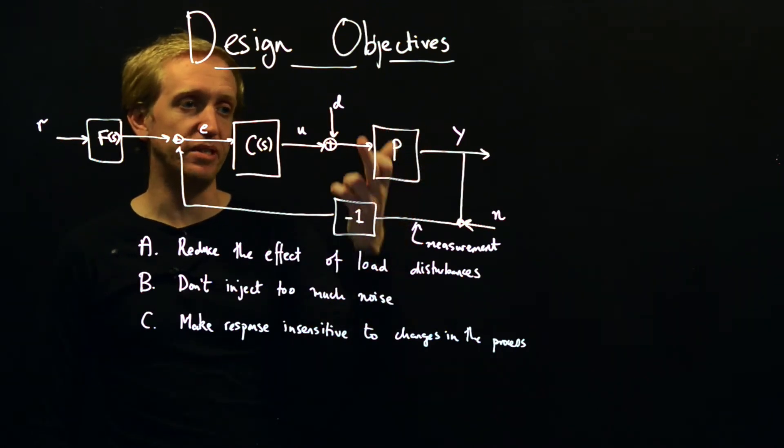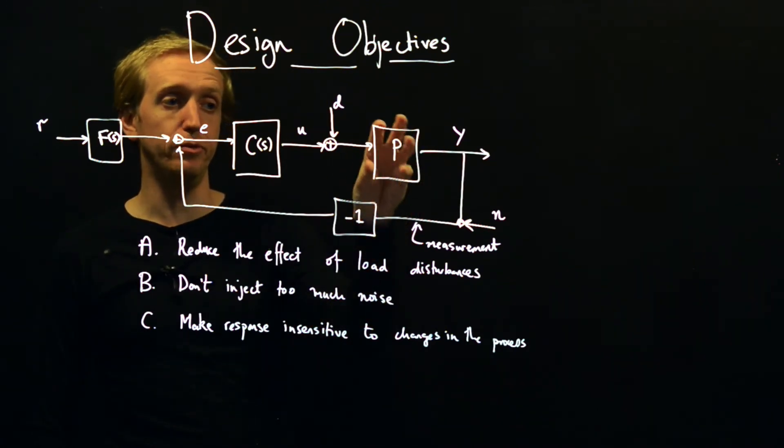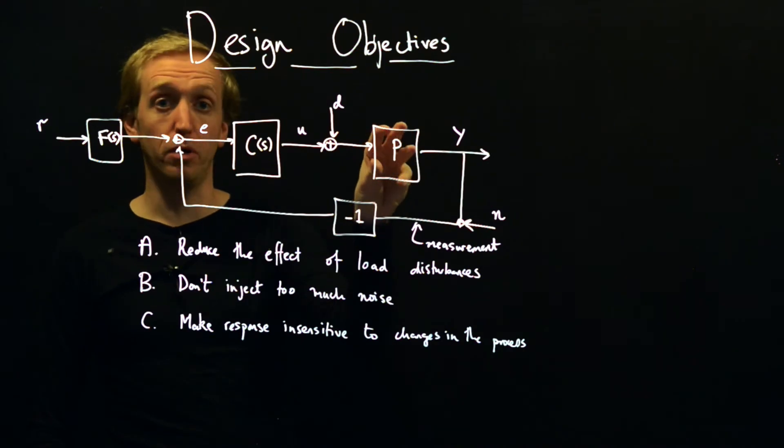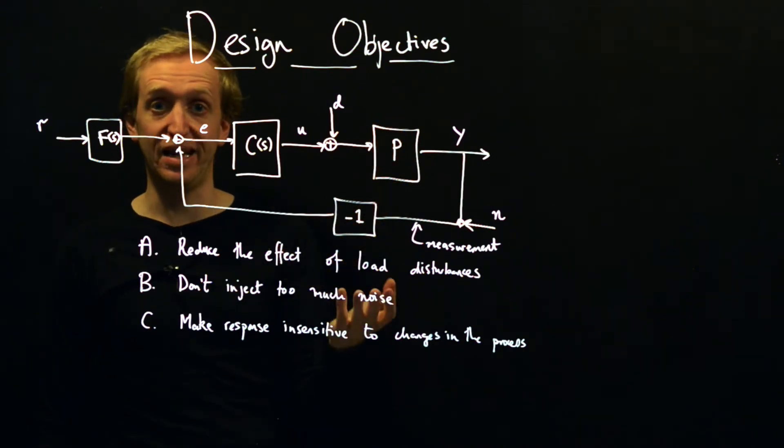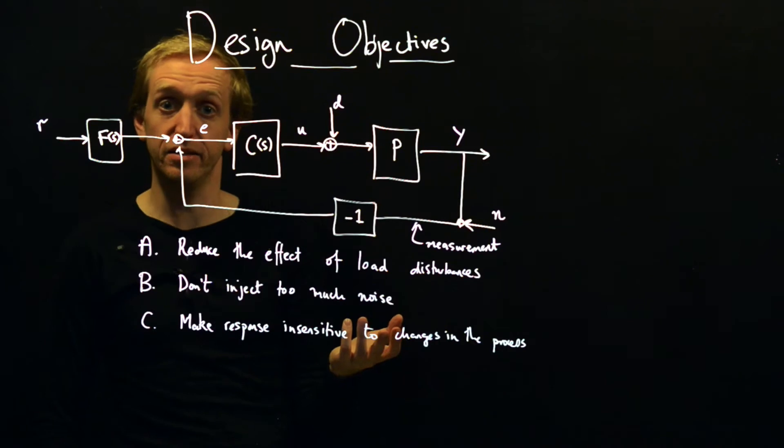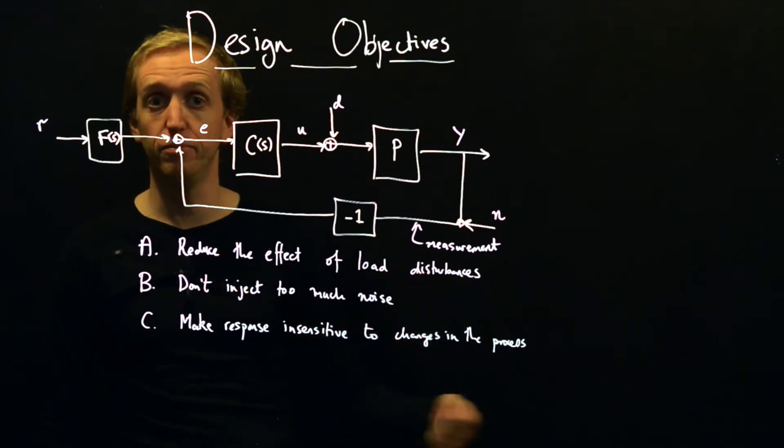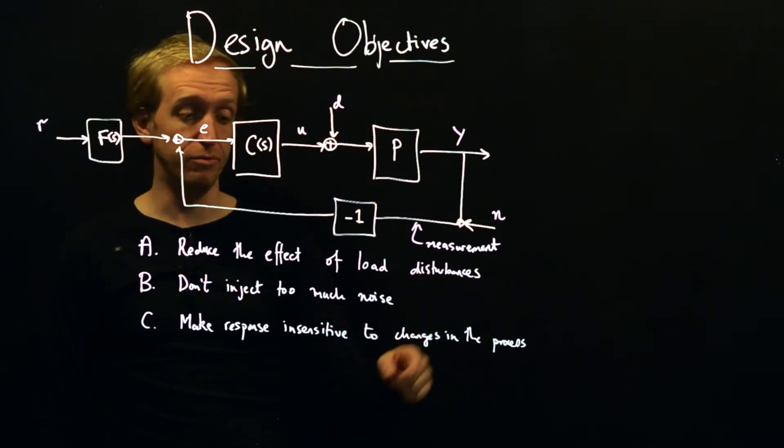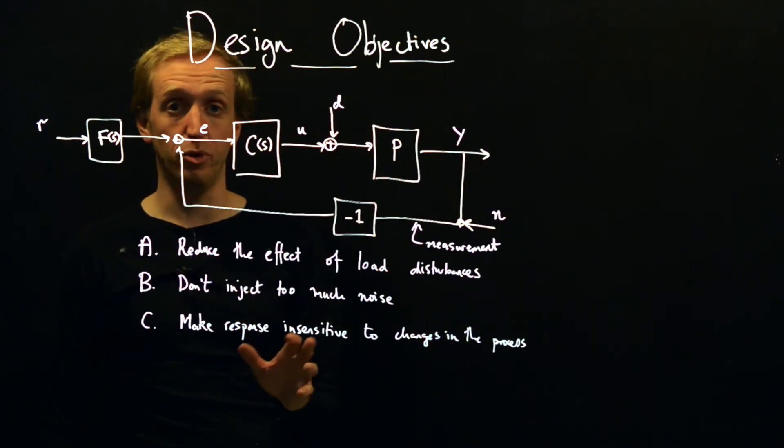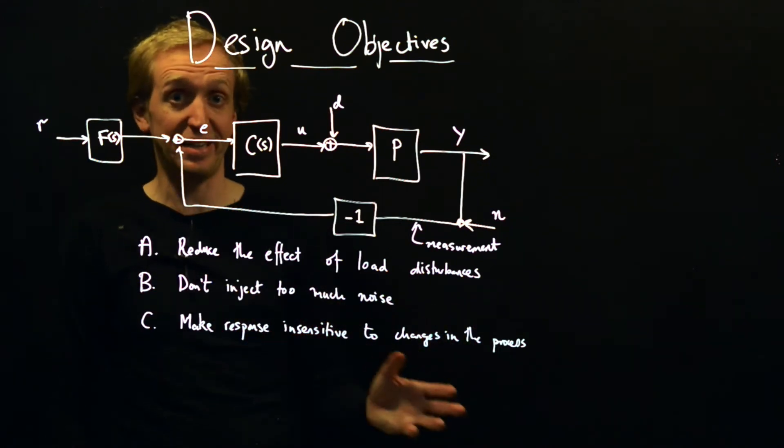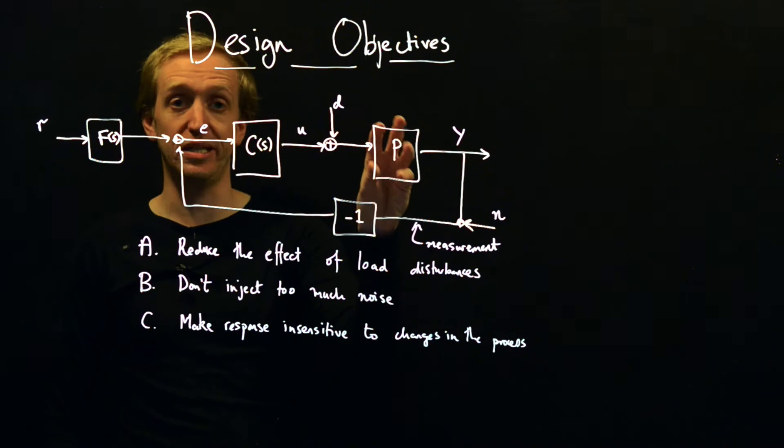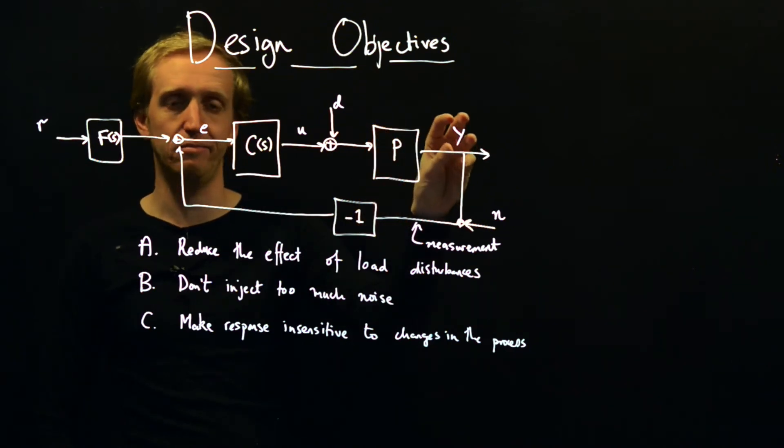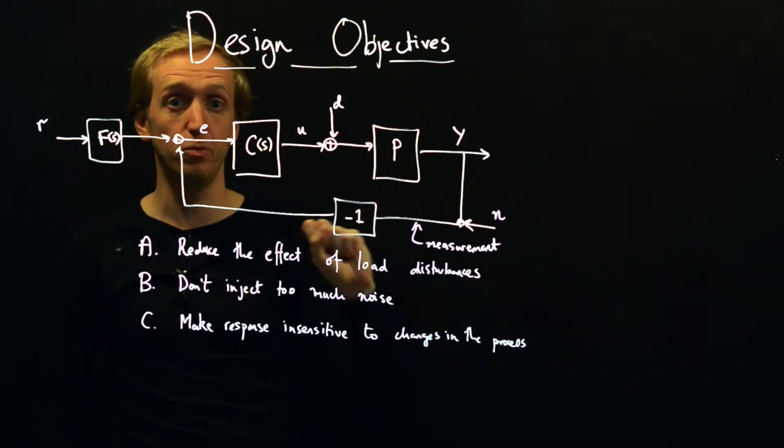Often, maybe this is getting a bit more philosophical, but you will only ever have a model of your process. You'll never know exactly what your process is. You'll just have some rough idea. And hopefully, we can do our control system design so that this doesn't actually matter. We don't need to know exactly what our process is in order to get the output to do what we want it to do.